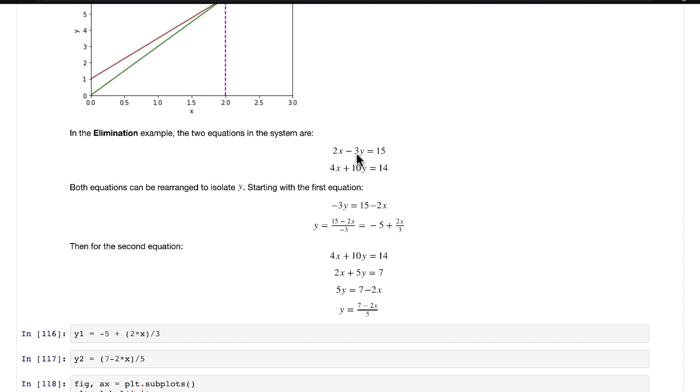Let's start with the first one here. We can move 2x over to the other side, which gives us -3y = 15 - 2x. Then, in order to isolate y completely, we can divide both sides of the equation by -3. On the left-hand side, that leaves us with y, which is what we wanted.